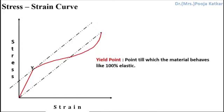The next important parameter is the yield point. After the 100% elastic portion is over, if you increase the load, the curve starts bending towards the x-axis because of the presence of viscous material, and eventually the material breaks. In any stress-strain or load-elongation curve, the point up to which the specimen behaves like 100% elastic is known as the yield point. The corresponding stress is the yield stress and the corresponding strain is the yield strain. This is also called the elastic limit.